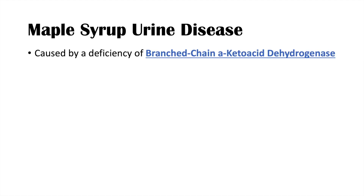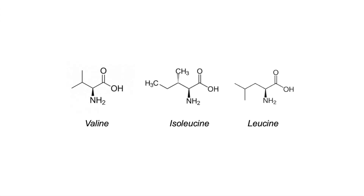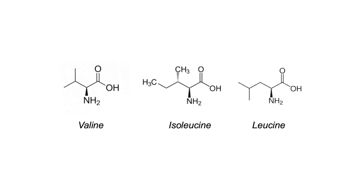Maple syrup urine disease is caused by a deficiency of the enzyme branched-chain alpha-keto acid dehydrogenase, which is encoded by four genes. This leads to a dysfunction of branched-chain amino acid metabolism. We can remember the branched-chain amino acids by the mnemonic VIL: valine, isoleucine, and leucine.